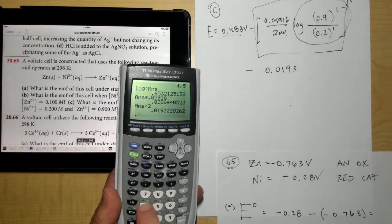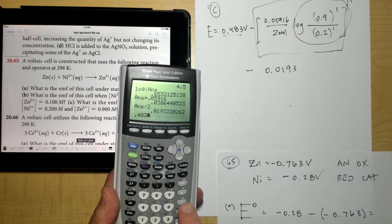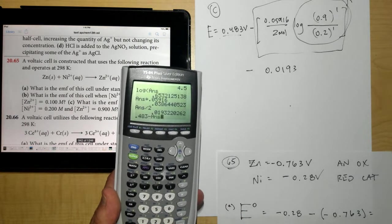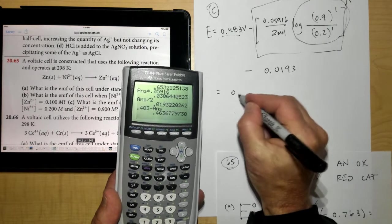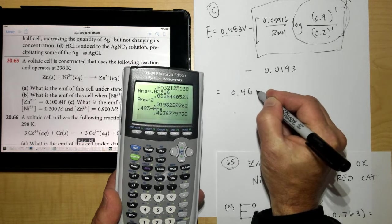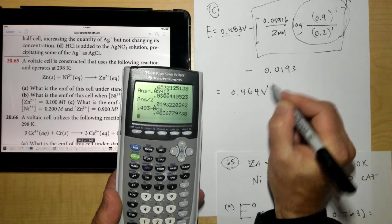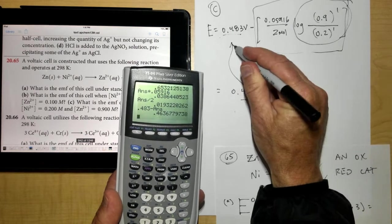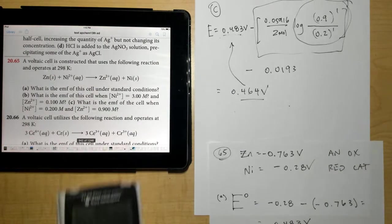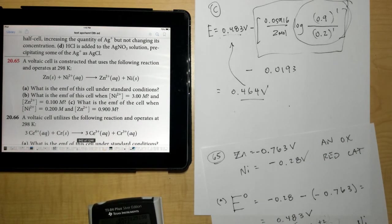So 0.483 minus second answer, I end up with a voltage of 0.464 volts, which of course is less than what I started with. Hopefully you learned just a little bit about the Nernst equation and non-standard conditions in this problem. Thank you.